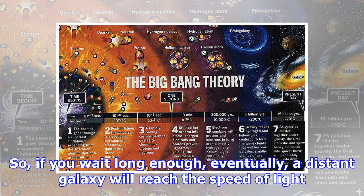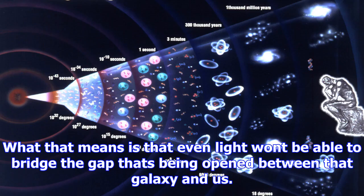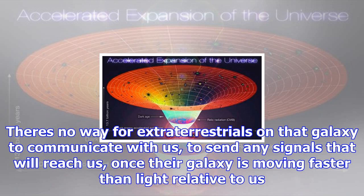So, if you wait long enough, eventually, a distant galaxy will reach the speed of light. What that means is that even light won't be able to bridge the gap that's being opened between that galaxy and us. There's no way for extraterrestrials on that galaxy to communicate with us, to send any signals that will reach us, once their galaxy is moving faster than light relative to us.